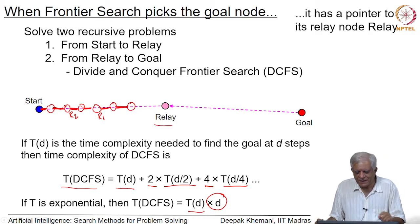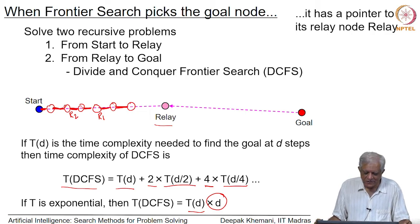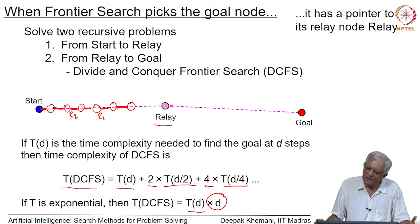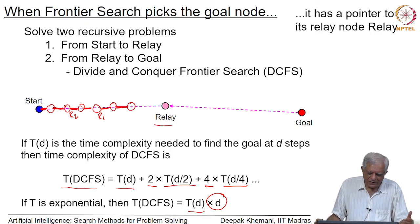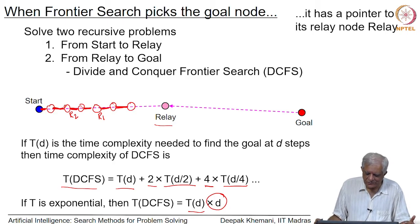We know that the path to the goal goes through that relay node. So you recursively solve the path from start to the relay node and from the relay node to the goal node, and that itself is done recursively. This algorithm does repeated searches to solve the problem.